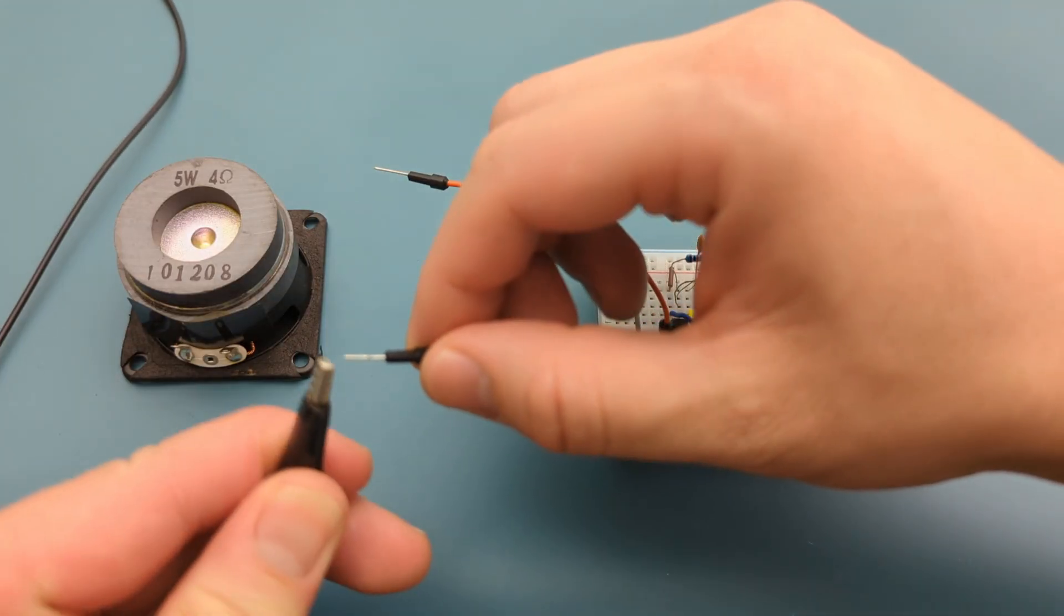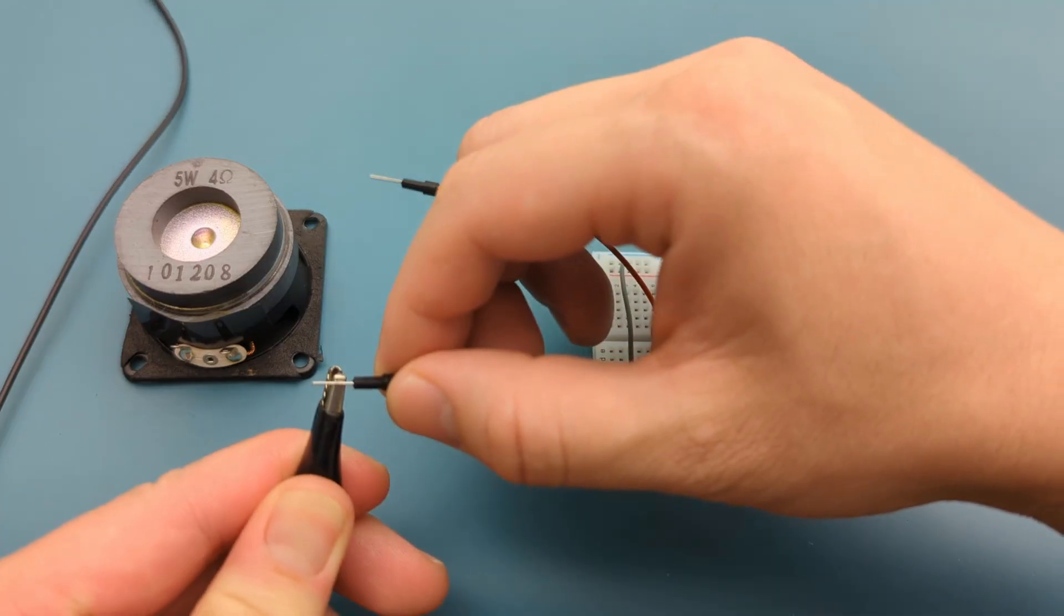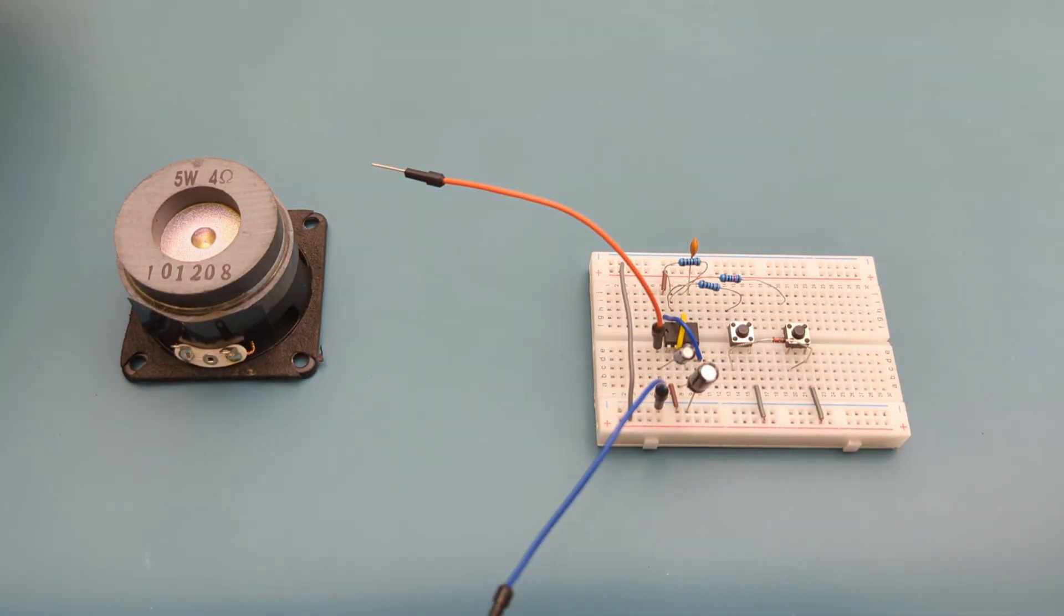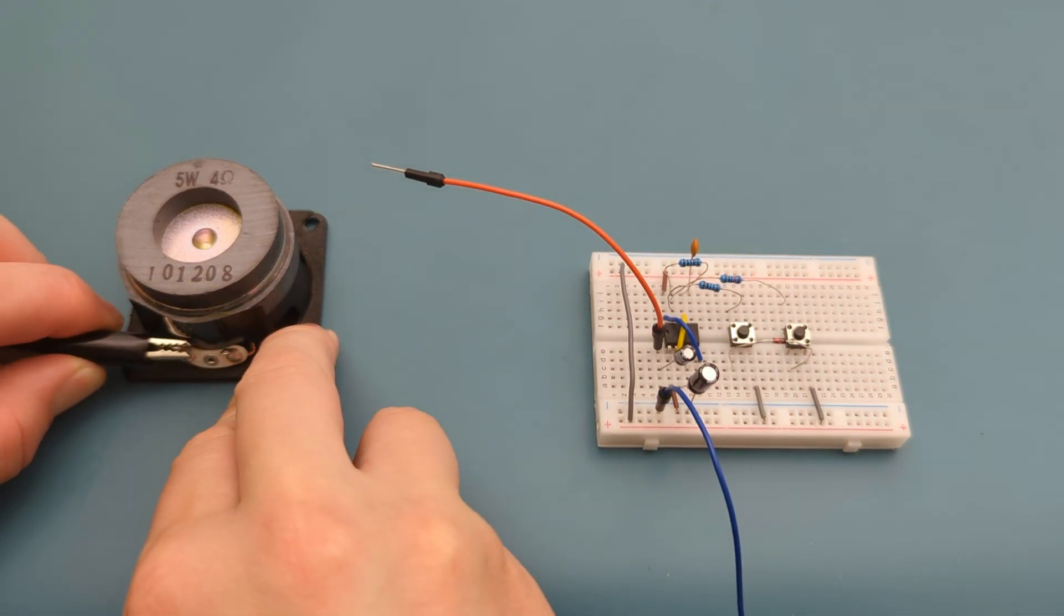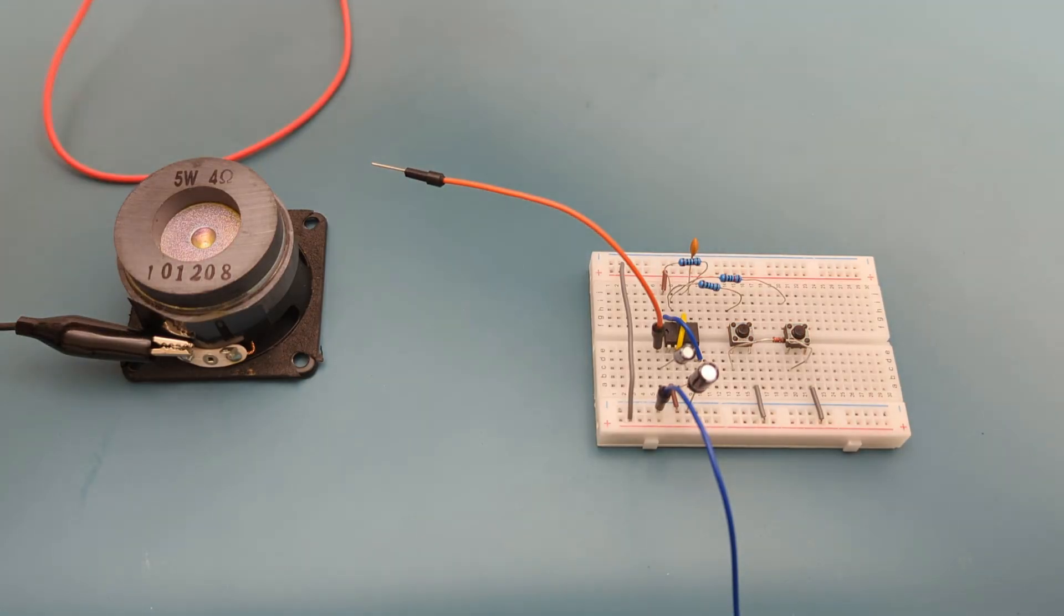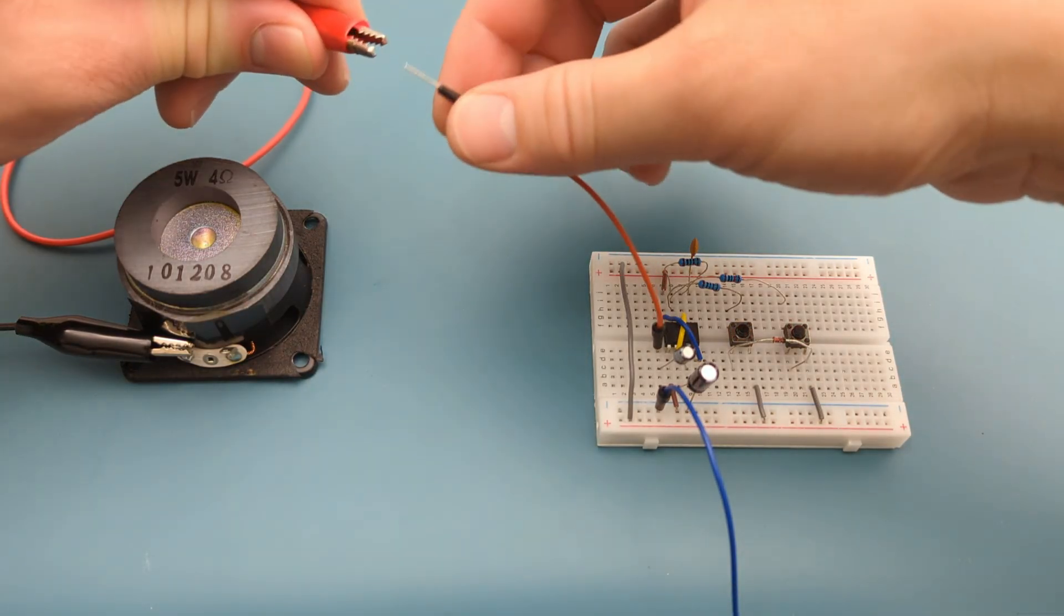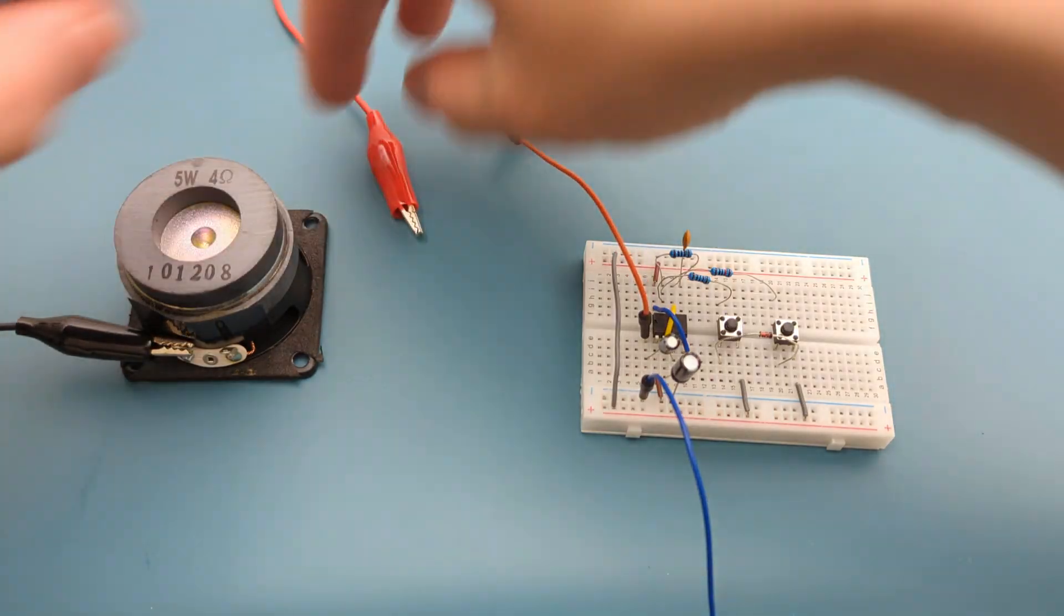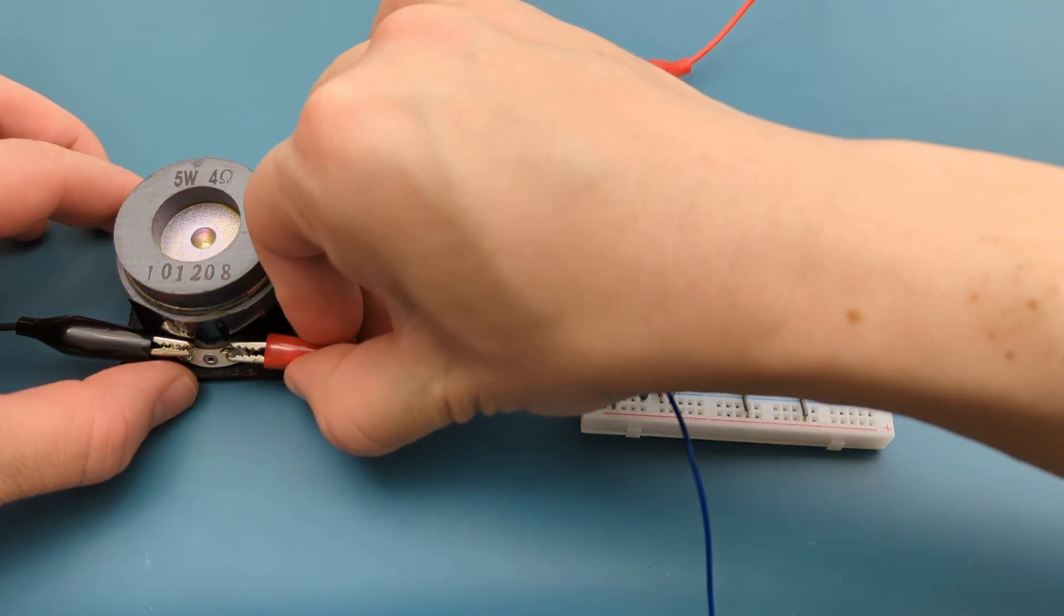Connect the black alligator clip to the blue jumper wire. Connect the other end of the black alligator clip to the negative terminal of the 5 watt speaker. Connect the red alligator clip to the orange jumper wire. Connect the other end of the red alligator clip to the speaker's positive terminal.